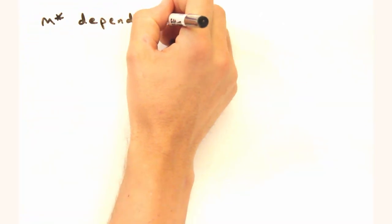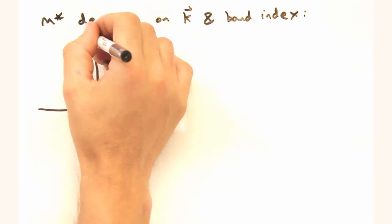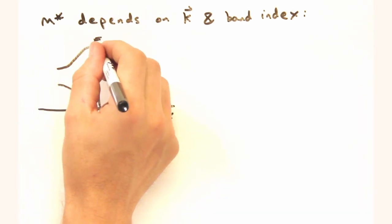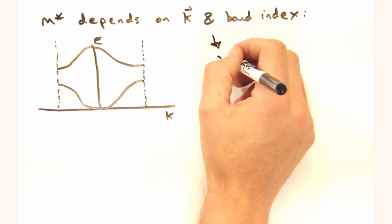It seems like the effective mass is then a parameter that varies depending on which k point in the band that you're at. It does. Okay, let's see what we can do with this effective mass parameter.